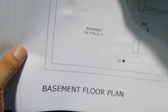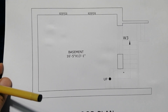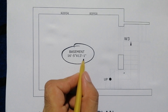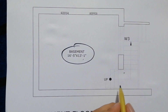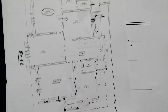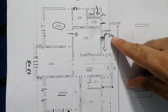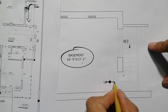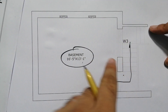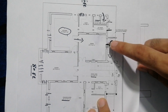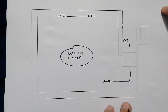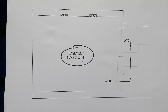By this staircase you can go down to the basement. The basement floor plan size is 16 feet 5 inches by 13 feet 1 inch. There is a door from the main entrance side and a staircase going down — and from this side you can also go back up. Window 3 provides ventilation for the basement, and the stairs continue upward as well.